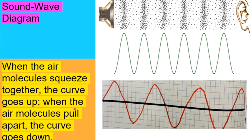So here's how the model works. When the air molecules squeeze together, the wave goes above the line. And then when the air molecules pull apart, the wave goes below the line. And then in the middle is perfect equilibrium, neither compressed or rarefacted.